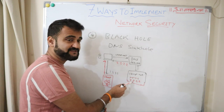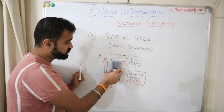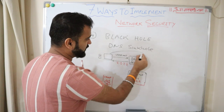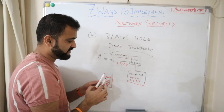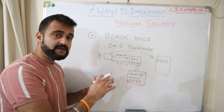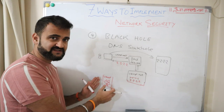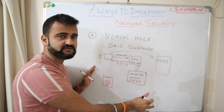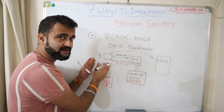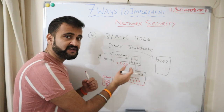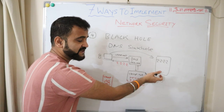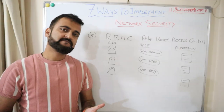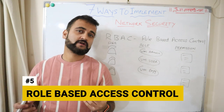So instead of the request going to the attacker's machine or environment, it gets routed to a safer device within the network — a dedicated machine created to absorb such requests. This avoids any engagement between the client and the attacker, because any request going to the malicious domain via DNS is redirected to the DNS sinkhole device. This is an effective way to completely break the communication link between the attacker and the target.